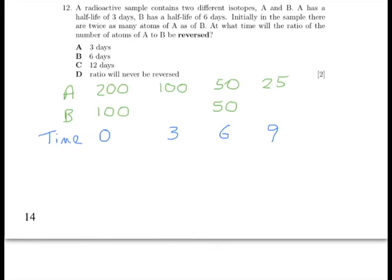Our final point here is going to be 12 days, where sample A will have halved to 12.5. I know we can't have half an atom, but we're talking about much bigger numbers here. We've just simplified things by starting with 200 and 100. And we know that sample B will have halved once again to 25.